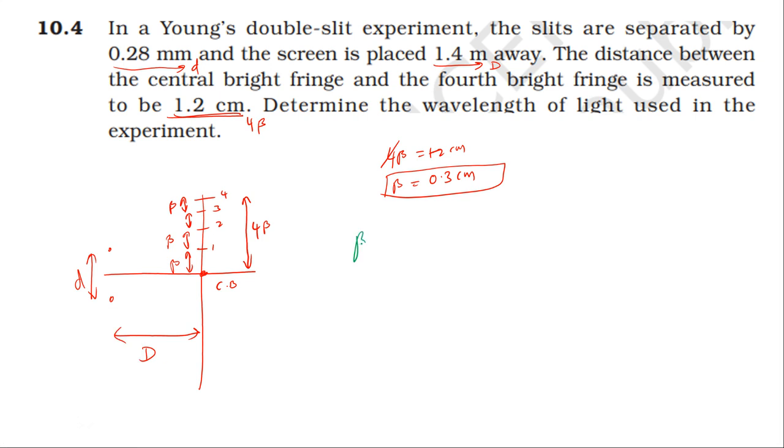In the double slit experiment, beta equals lambda times D over d. So lambda equals beta times d over capital D, which is 0.3 times 10 to the power minus 3 meter times 0.28 times 10 power minus 3 meter divided by capital D, 1.4 meter.